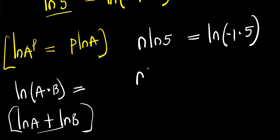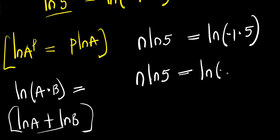Applying the log power and product rules: n times natural log of 5 equals natural log of negative 1 plus natural log of 5.